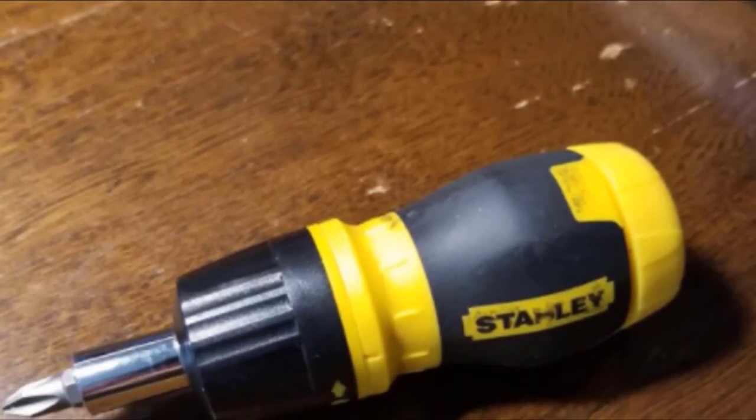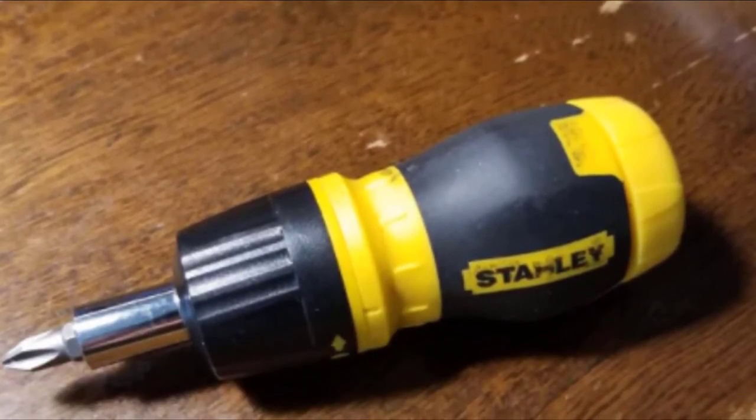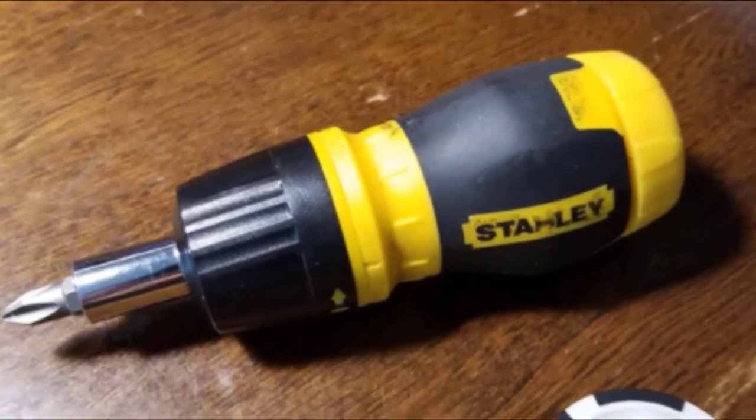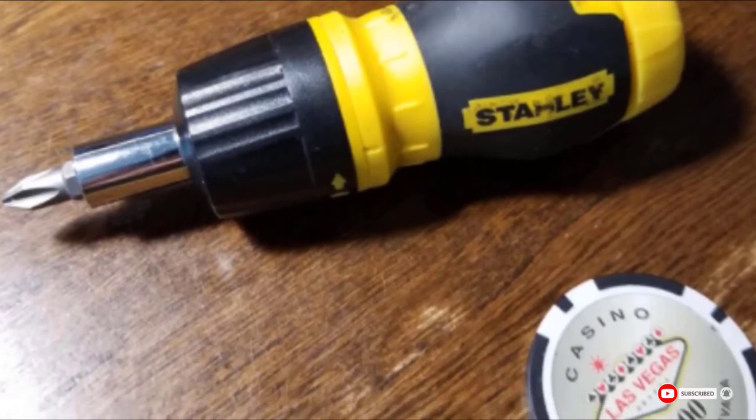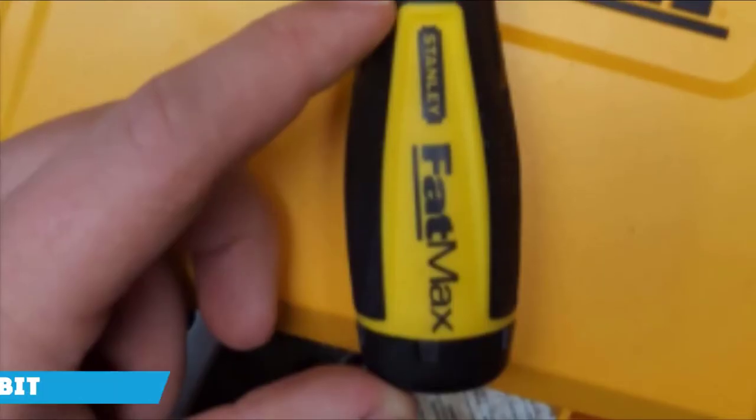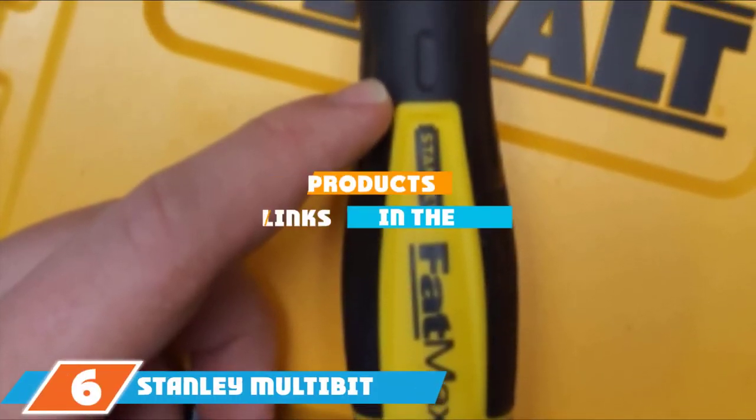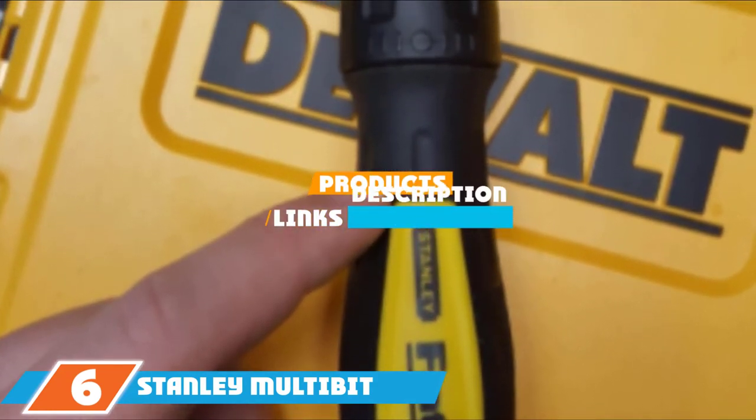The magnetic tip keeps your bits in place and allows easy access with speedy compression, while the 3-position switch ensures it's easy to control even at odd angles where larger screwdrivers would struggle. The number 6 position is dominated by Stanley Multi-Bit Ratchet Screwdriver.